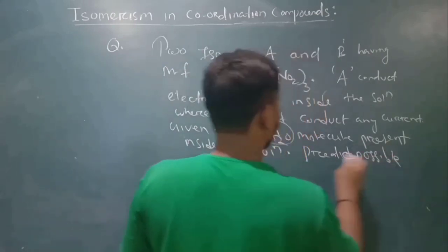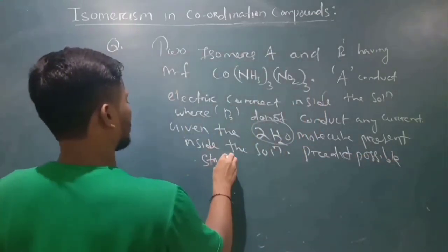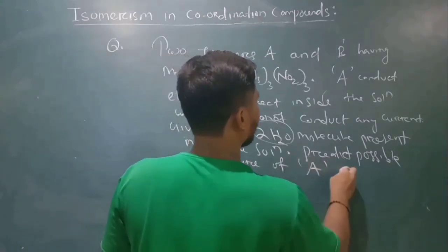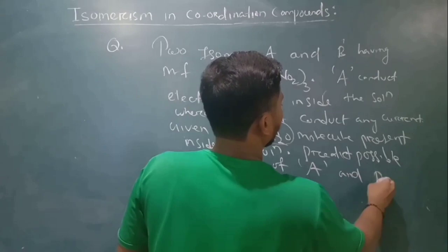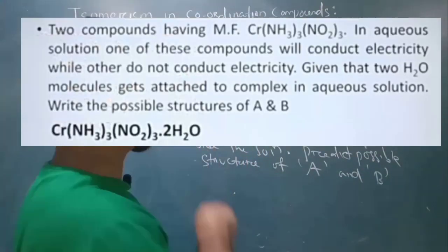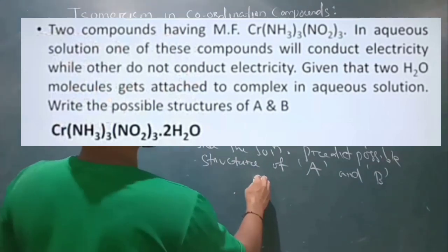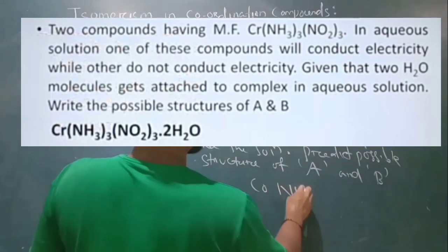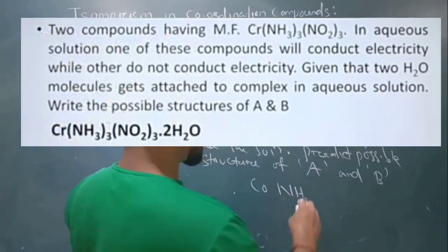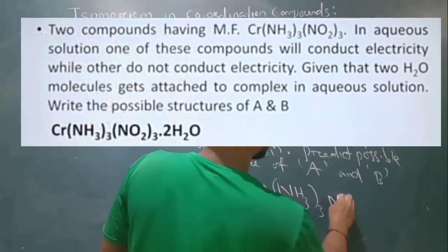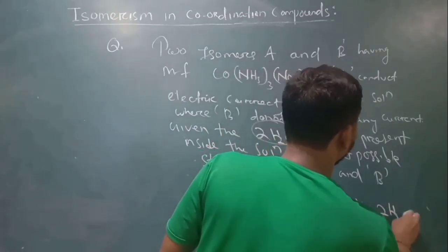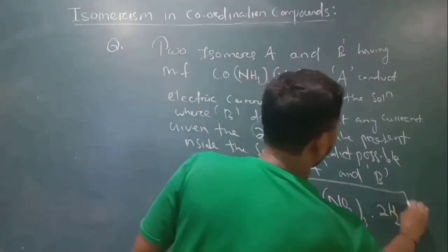Compound A conducts electric current while B does not conduct any current. Using the data about water of crystallization, we can determine the coordination compounds A and B.